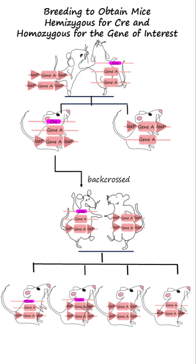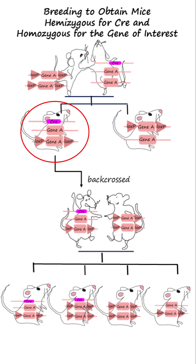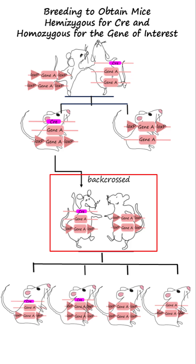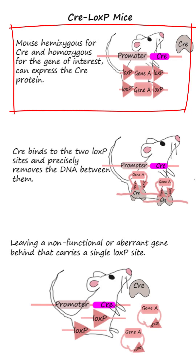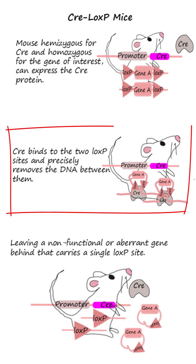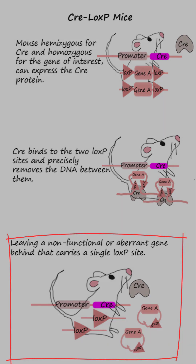In mouse models, a Cre mouse is mated with a floxed mouse, and progeny heterozygous for the loxP-flanked gene and hemizygous for Cre are then backcrossed to homozygous loxP-flanked gene parental mice. The F2 progeny, hemizygous for Cre and homozygous for the gene of interest flanked by loxP sites, can express the Cre protein, which binds to the two loxP sites and precisely removes the DNA between them, leaving a non-functional or aberrant gene behind.